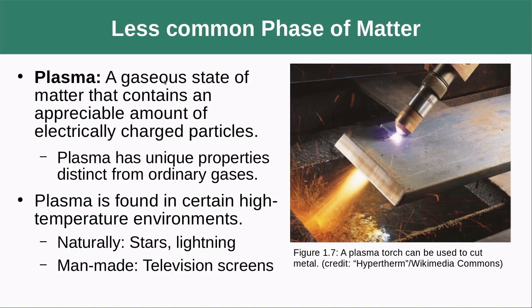Somewhat less common but a distinct phase of matter is plasma. Plasma is basically what you get if you keep dumping energy into a gas — you wind up with a gaseous state of matter that contains an appreciable amount of electrically charged particles. It has unique properties distinct from other gases and can be found in high-energy, high-temperature environments. Naturally there's plasma inside stars, lightning produces plasma, and we use it in man-made applications like plasma torches and industrial surface treatment.